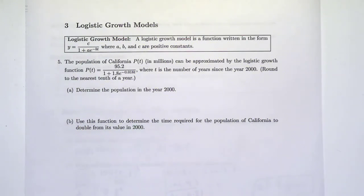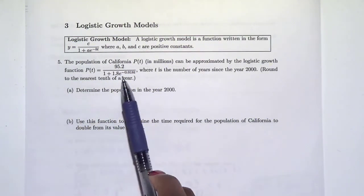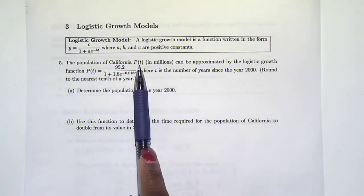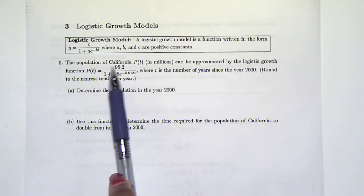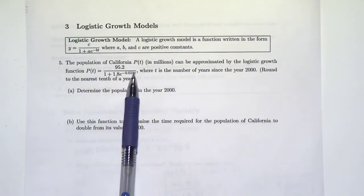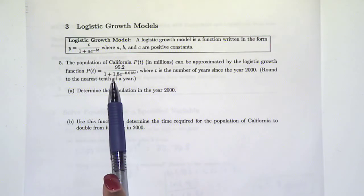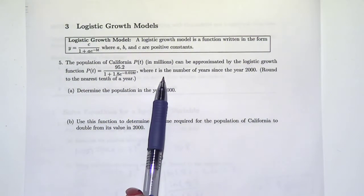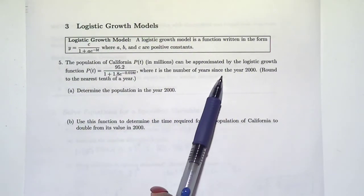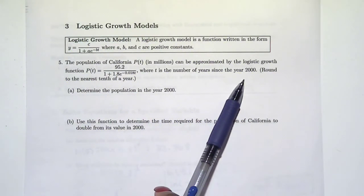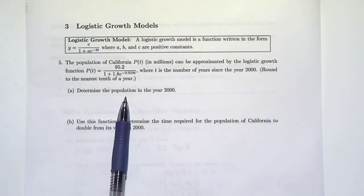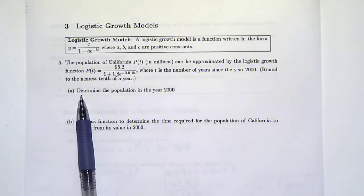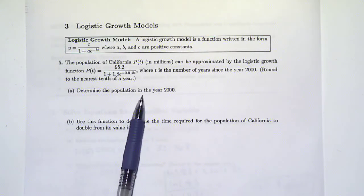For example five, the population of California P(t), given in millions, can be approximated by the logistic growth function, where t is the number of years since the year 2000. Round to the nearest tenth of a year. The first part says determine the population in the year 2000.